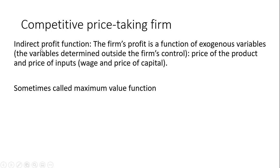The Indirect Profit function is the following. The firm's profit is a function of exogenous variables — the variables determined outside the firm's control. These would be the price of the product, determined by market demand and market supply, and the price of inputs, determined in the market for labor and capital. This Indirect Profit function is often called a Maximum Value function.